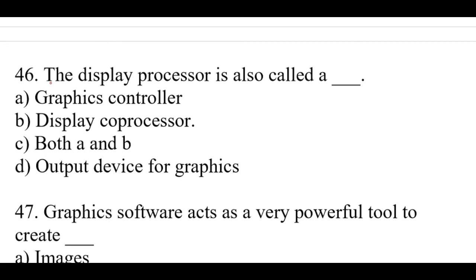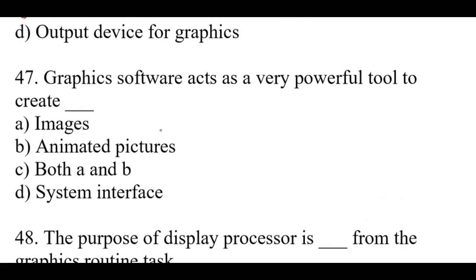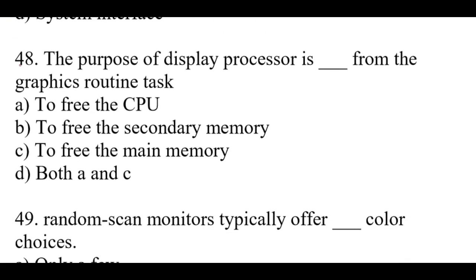Question number 46: The display processor is also called a dash. Right option is C, both A and B - graphics controller and display co-processor. Question number 47: Graphics software acts as a very powerful tool to create dash. Right option is C, both A and B - images and animated pictures.